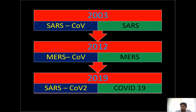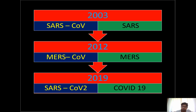Coronavirus is not a new virus — it was already seen previously causing huge health disasters. In 2003 it caused Severe Acute Respiratory Syndrome (SARS), and in 2012 we had MERS, the Middle East Respiratory Syndrome epidemic. Now in 2019 we have a pandemic called COVID-19, caused by a coronavirus similar to the SARS coronavirus, and so the virus is named SARS-CoV-2.